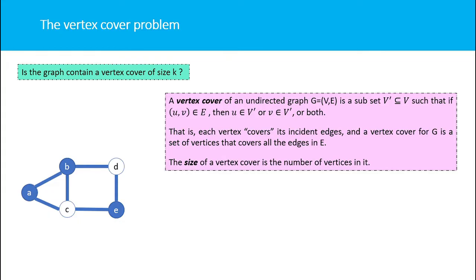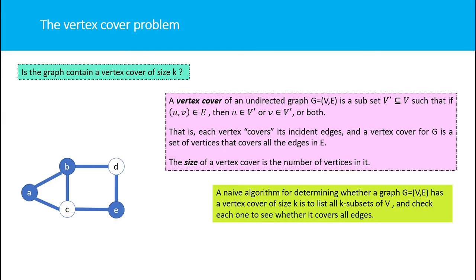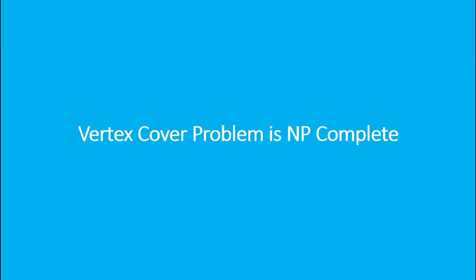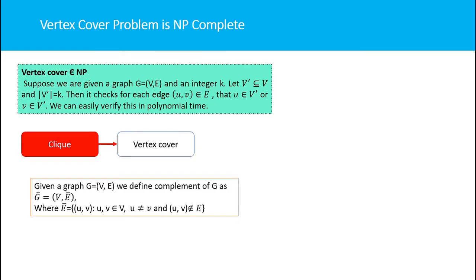This graph has a vertex cover of size 3. Our problem is: given a graph, find out whether it has a vertex cover of size K. A naive algorithm is to list all K-subsets of vertices and check each one to see whether it covers all edges — but this cannot be done in polynomial time.